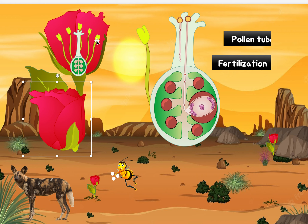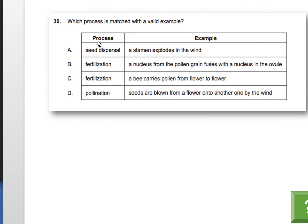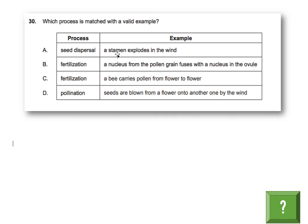The stamen does not have a seed, so a seed cannot be dispersed from it — it has pollen, but pollen is not a seed. So option A is definitely wrong. If they had said a peapod explodes in the wind, that might be right. But because they say a stamen, which one doesn't have a seed, and two doesn't explode, it's not A.